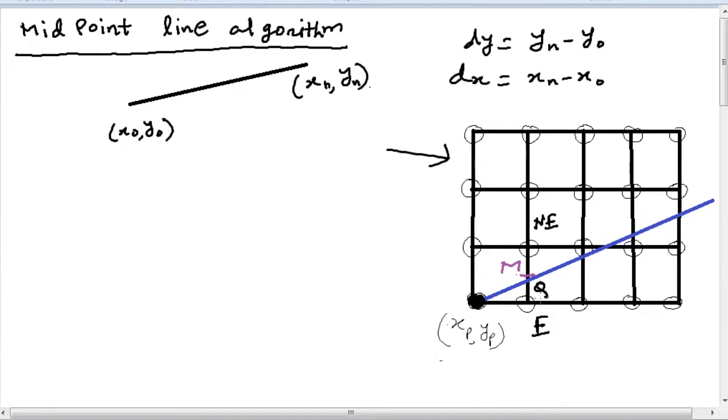Now we all know the equation of a line is given by ax plus by plus c equals 0, where a, b, c are the coefficients. If we write it as a function, we can write f(x, y) equal to this equation.